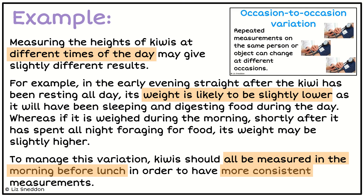That identifies the source of variation and discusses its effect. To manage that variation, my suggestion is that the kiwis should all be measured in the morning before lunch, which will give more consistent measurements. I don't know for sure if that was what was done when the data was collected, but this is a good recommendation for if I had been collecting the data myself.